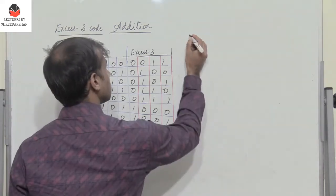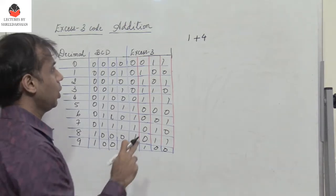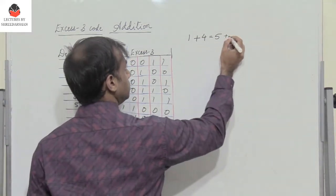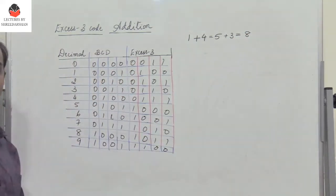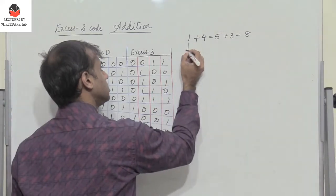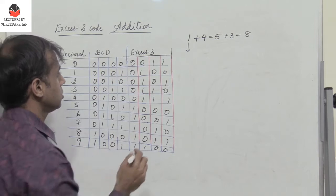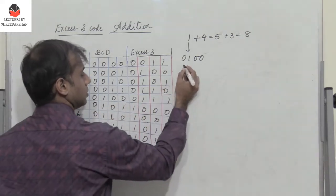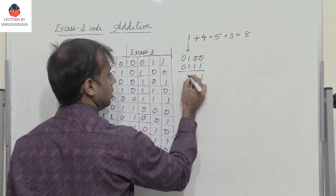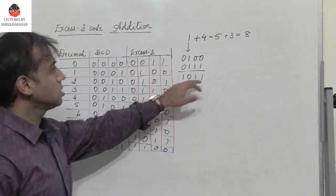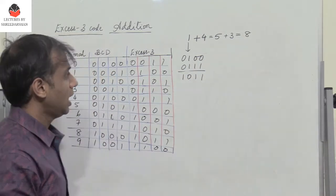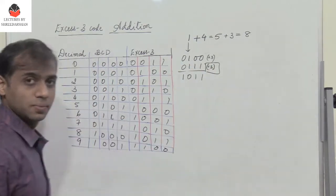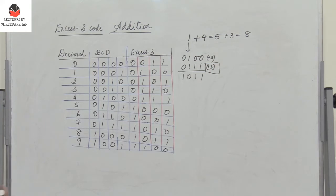Let's begin with 1 plus 4, which gives 5. But since it is XS3, I should actually get 5 plus 3, which is 8. When we perform XS3 addition, we first write the XS3 representation of 1, which is 0100, and for 4, the XS3 representation is 0111. Adding them gives 1101. Now this does not correspond to 8, because we added 3 here and also added 3 here, so we have added 3 more in excess.